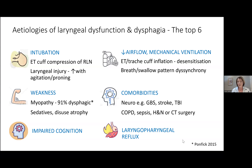Research now points to about six top factors to consider. The first and most obvious is intubation and intubation trauma to the larynx — things like cuff compression of the recurrent laryngeal nerve by the ET tube. Laryngeal injury is often worsened when a patient is agitated and moving around, as the more movement, the more likely the ET tube is to injure those delicate structures. Proning also exacerbates pressure on the larynx, though the research to support that hypothesis is still limited.